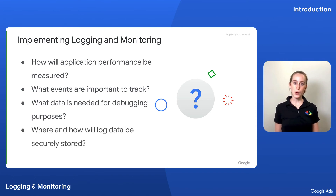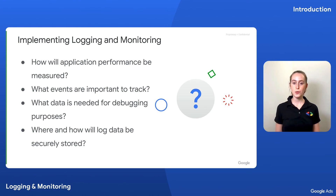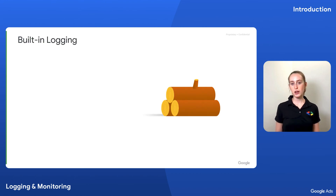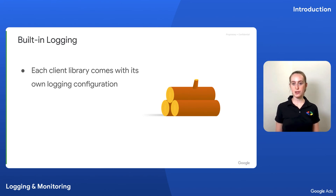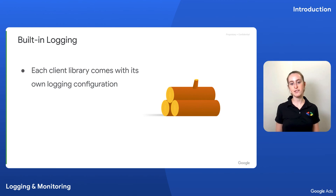Lastly, where and how will log data be securely stored? This isn't a complete list, but rather a starting point. Once you identify what core data to log and monitor in your application, you can effectively choose a logging and monitoring solution that meets your project's needs. As we saw earlier, you get some logging for free if you're using a Google-supported client library for your Google Ads API integration. Each client library comes with its own logging configuration, which makes it simple to turn logging on or off, specify log levels, and configure output locations.